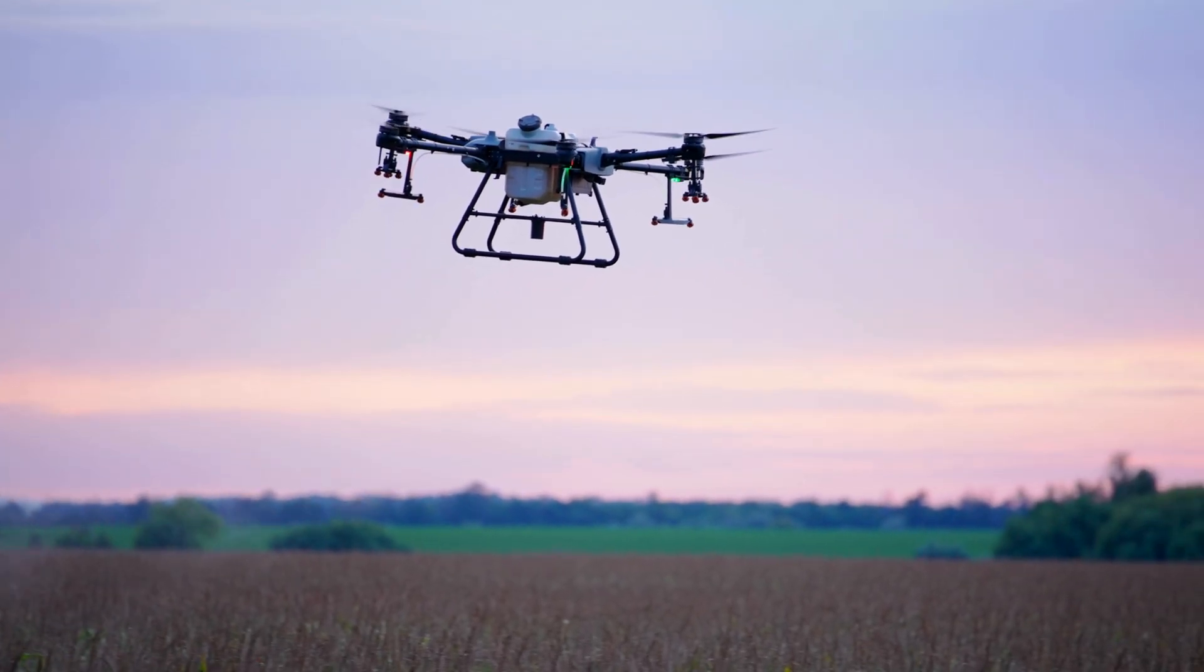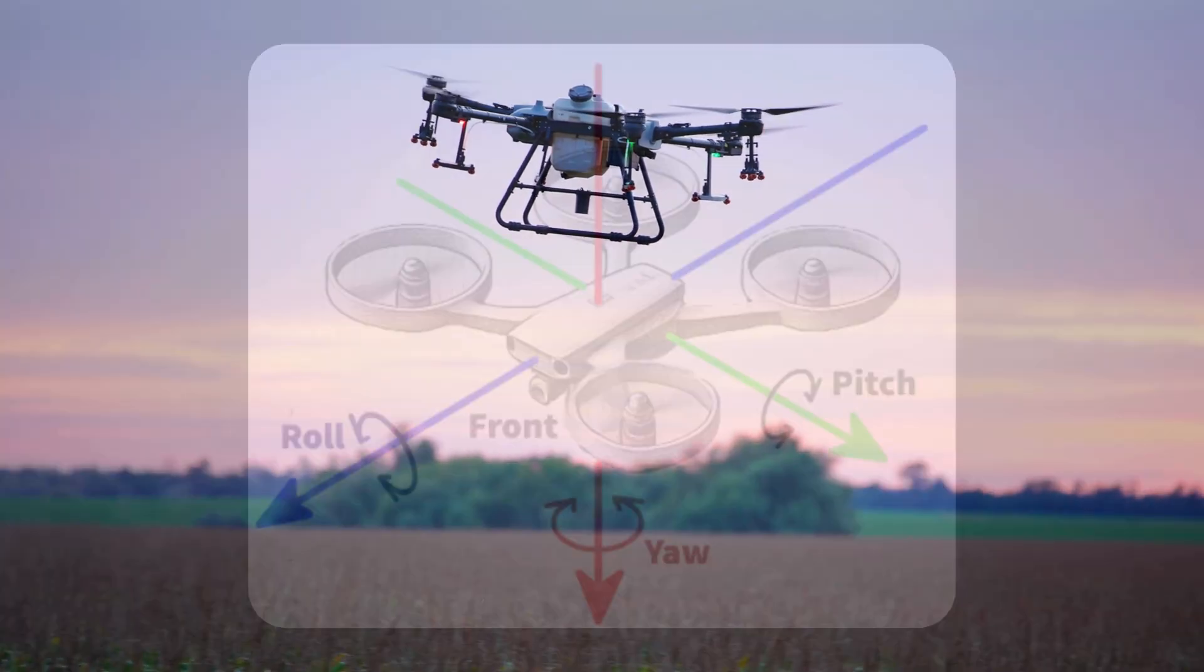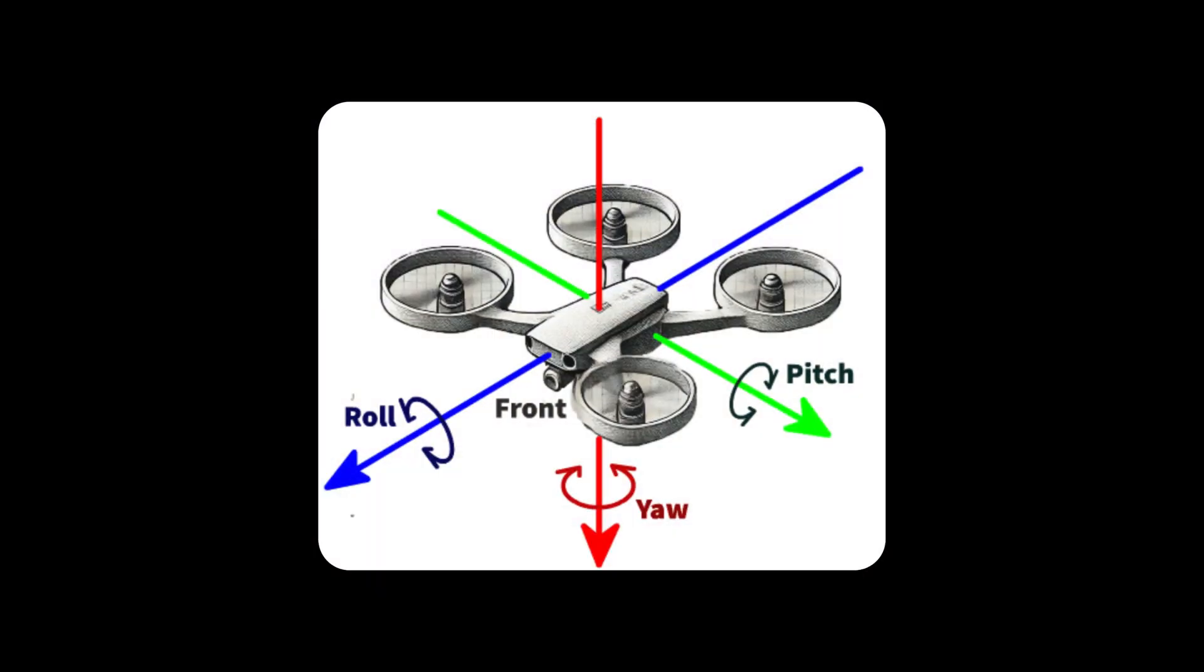To maneuver, the drone utilizes three rotational motions: pitch, roll, and yaw. Pitch is the rotational movement in the y-axis that causes the drone to tilt forward or backward. Roll is the rotational movement in the x-axis that causes the drone to tilt sideways. And yaw is the rotation in the z-axis that determines which direction the drone is facing.